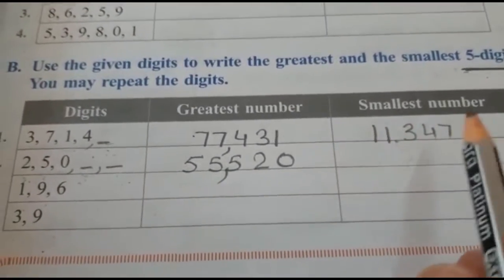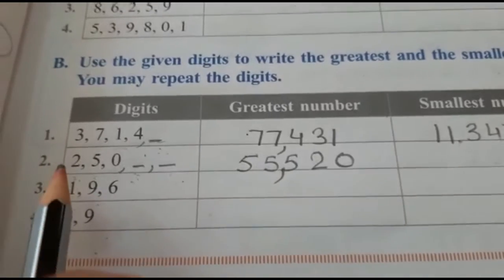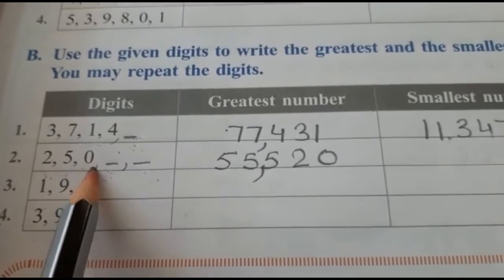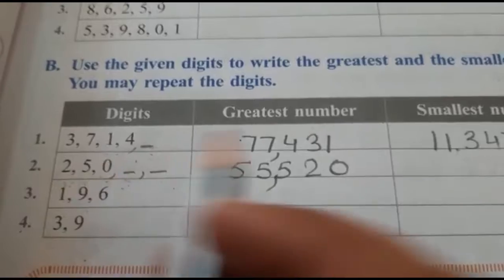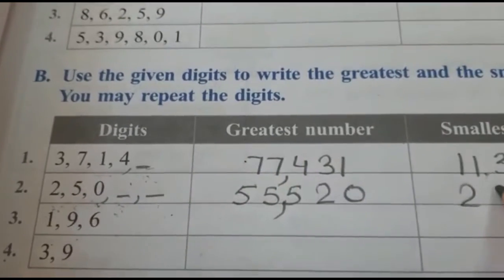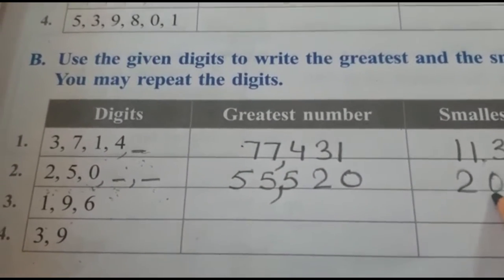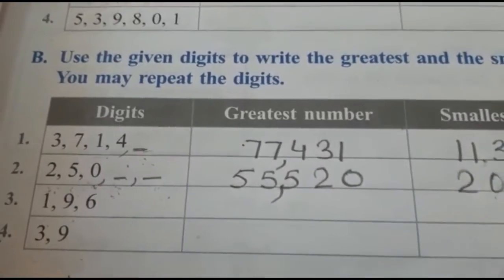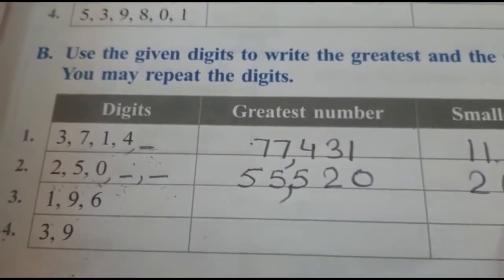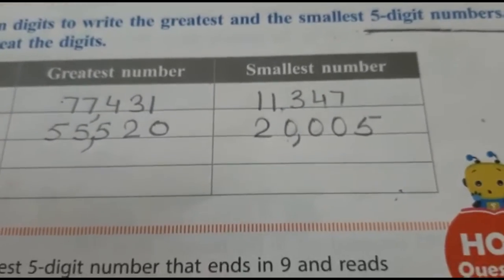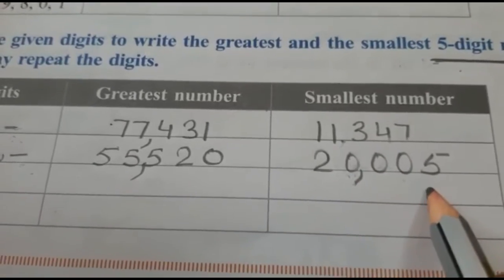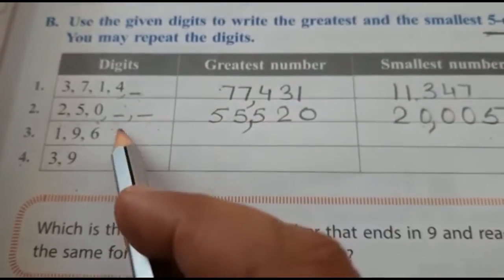For writing the smallest number, we never start from zero because zero has no value. We start with the next digit, which is 2. But the smallest digit is zero, so we repeat zero. Zero is given once in the statement and two more times in place of the blanks. The last digit is 5, so the number will be twenty thousand and five — the thousands, hundreds, and tens places are zero, so it is twenty thousand five only.